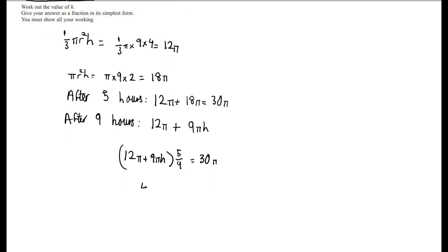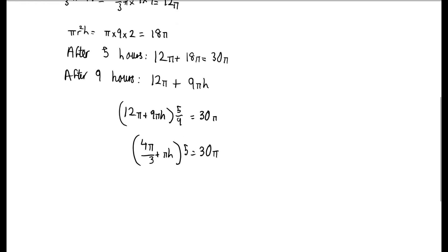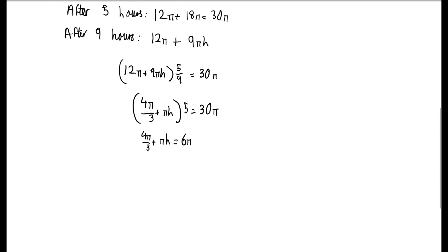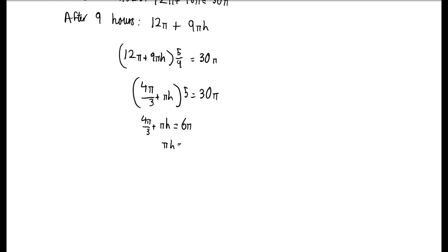Tidying this up, we get 4 pi over 3 plus pi h multiplied by 5 equals 30 pi. Dividing both sides by 5 gives 4 pi over 3 plus pi h equals 6 pi. Rearranging for pi h gives pi h equals 14 pi over 3. Dividing both sides by pi, we get h equals 14 over 3.